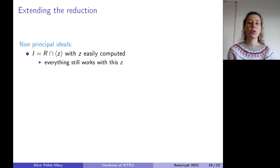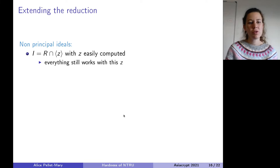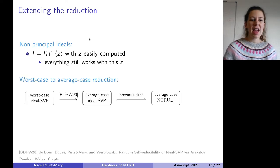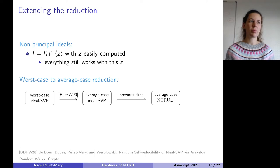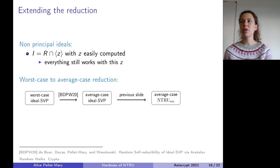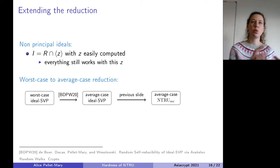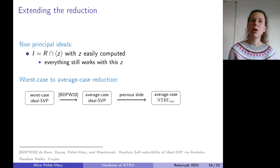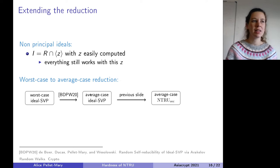I presented this for principal ideals, but you can extend it to any non-principal ideal. The idea is that any non-principal ideal can be written as the intersection of a principal ideal (for which you know a generator) and the ring of integers. With that representation, everything carries through with the same element Z. Another extension: the reduction I showed is one-to-one, but we want worst-case to average-case. We achieve that by combining a previous worst-case to average-case reduction for ideal lattices with this one-to-one reduction to get average-case NTRU.